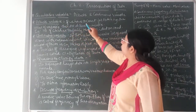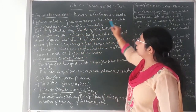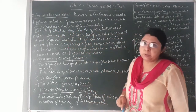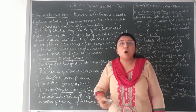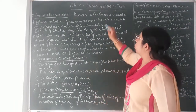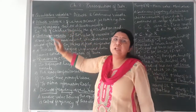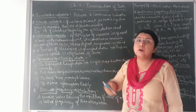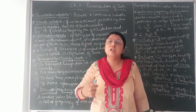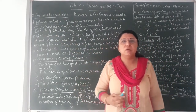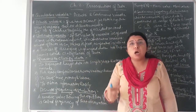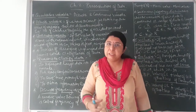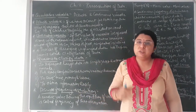Discrete variable: if we have to count for obtaining the value of a variable, then it is a discrete variable. For example, number of children per family — in one family there may be one, two, or three children, and we count that number to get the value. Another example is number of accidents on a road — to count how many accidents happen in a day is also a discrete variable.